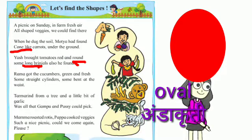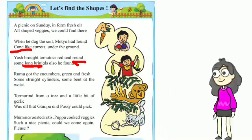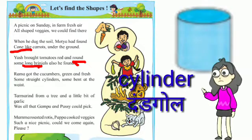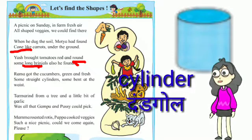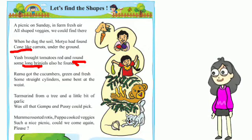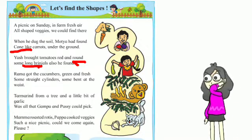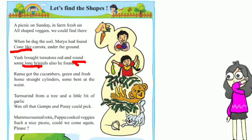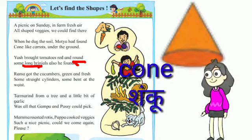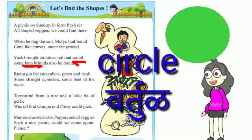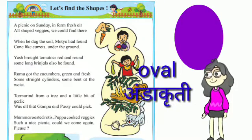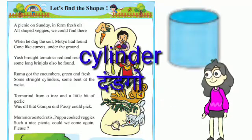So we have corn (cone), circle, and oval. Next shape: Rama got some cucumbers — cylinder shape. Tamarind from a tree and a little bit of garlic was all that Gampu and Pushy could pick. Let's overlook all the shapes: corn means cone (shanku), circle means gol, oval means undakruti aakar, and cylinder means dundgol.